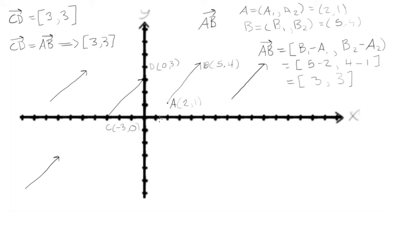If we decide to put the tail at the origin at (0, 0) and then draw the same vector [3, 3], we would get one that looks like this. When we draw it like this, we call that being drawn in standard position.